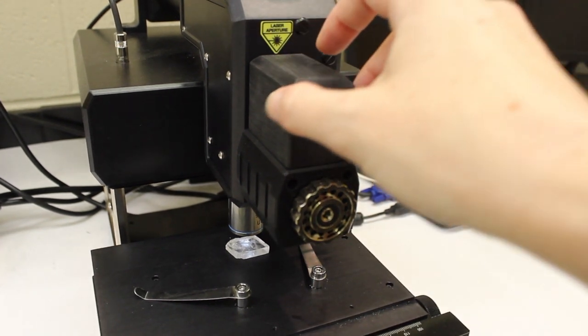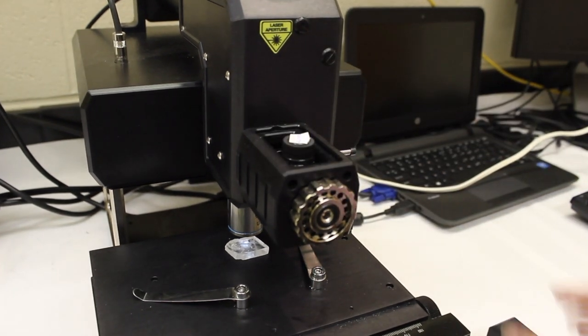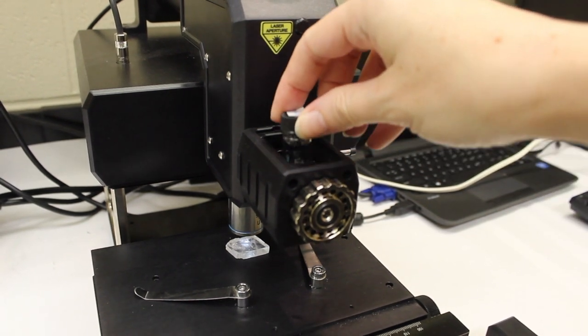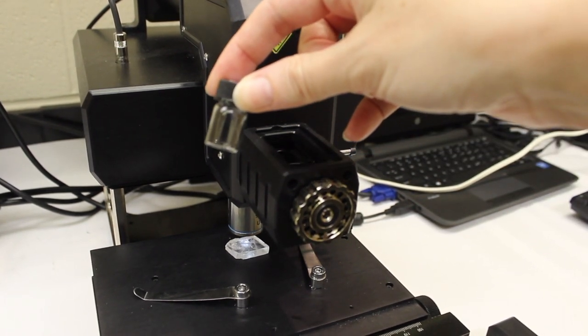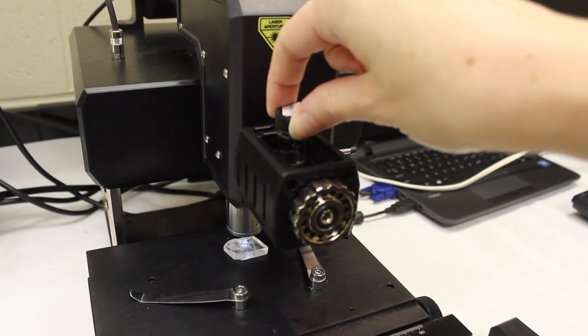If you have a liquid sample, you can put it in this top compartment. You simply fill one of the glass vials like this with the liquid and insert it into the spectrometer.